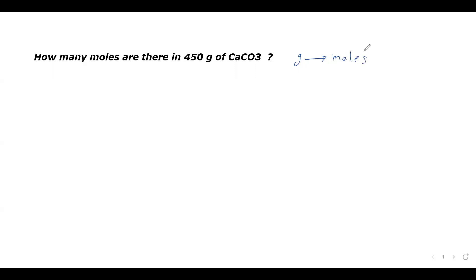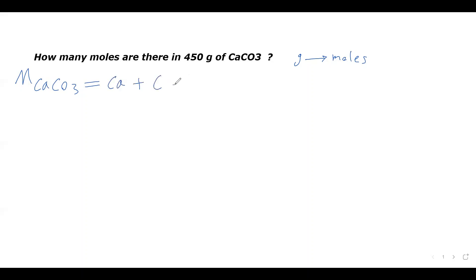Whenever we want to convert between grams and moles, the first thing we need to do is to find the molar mass of that compound. So here our compound is CaCO₃, so we need to find the molar mass of CaCO₃. The molar mass of CaCO₃ equals — we have one atom calcium, plus one atom carbon, plus three atoms oxygen.